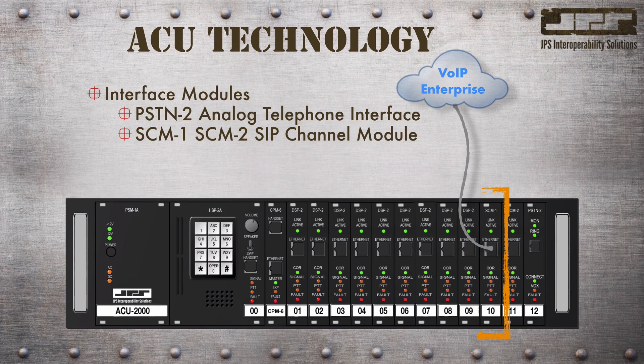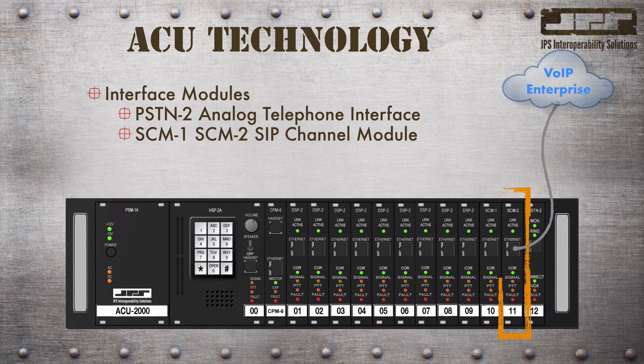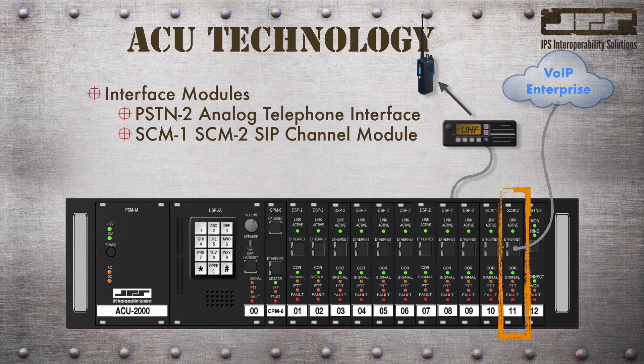Specifically, the SCM1 module interfaces VoIP telephone users directly with the radio network. It cannot be cross-connected with other disparate communication assets, whereas the SCM2 can be cross-connected to any other interface module in the ACU gateway. The distinction between the SCM1 and the SCM2 is that only the SCM2 can interoperate with other disparate communication environments.